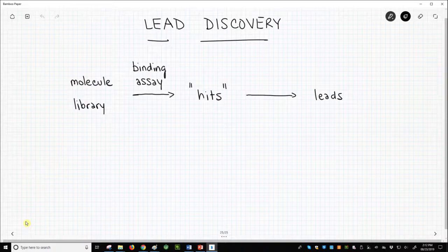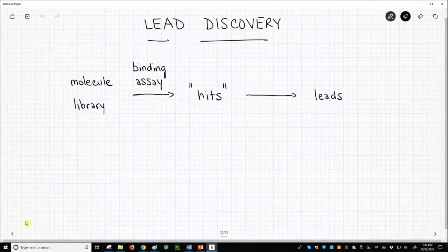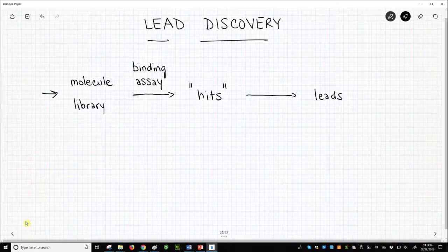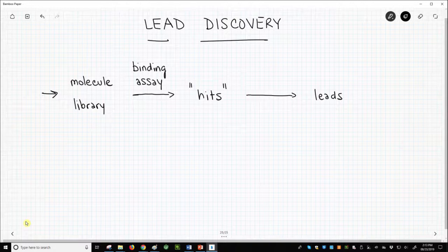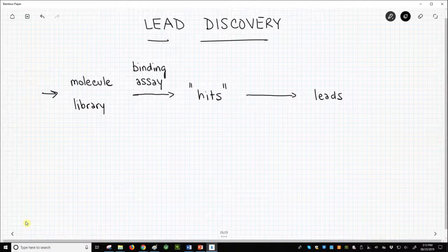The lead discovery process normally starts with a collection of molecules called a library. Drug companies employ many organic chemists who make drug-like molecules as part of their job. A sample of every new molecule is placed in the company's compound library. A compound library for a large drug company can have a million or even several million molecules.